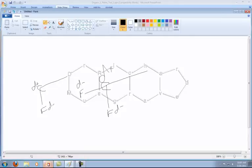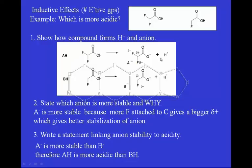We take the H+ off the O and leave an O negative in both cases. A minus is more stable because there are more Fs attached to the C, which gives a bigger delta plus on that C. A bigger delta plus gives better stabilization of the anion than a smaller delta plus. Since A minus is more stable than B minus, therefore AH is more acidic than BH. Remember: the more stable the anion, the more anion you will get from the compound. You get more anion, you get more H+. That's what makes these compounds more acidic — and always remember, it's the original compounds we're comparing for acidity, using the stability of their anions to do that job.